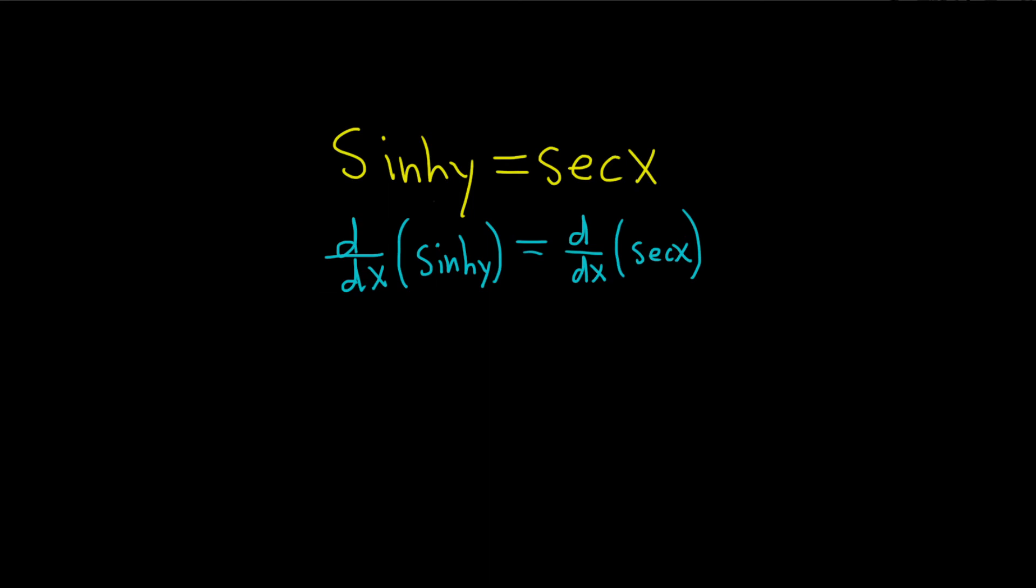Now here, it's not sinh x, it's sinh y. So it'll be cosh y times the derivative of the inside, which is just dy/dx. If it's not x, it's y, so when you take the derivative of the inside, you get dy/dx. If it's cosh x, then you would just get dx/dx, which is 1, so you don't have to write it.